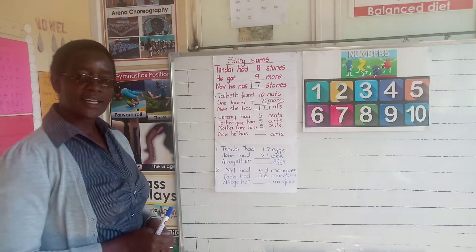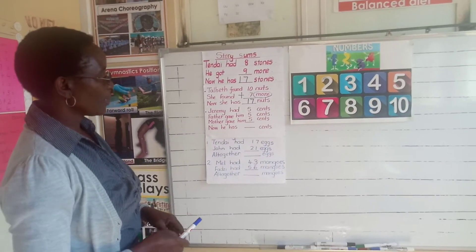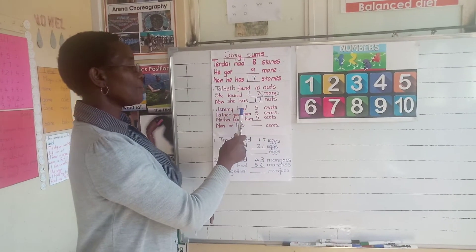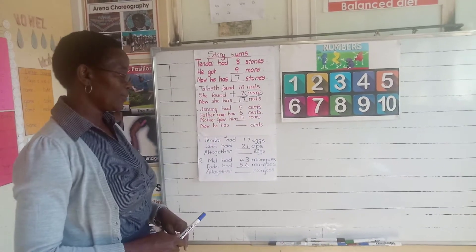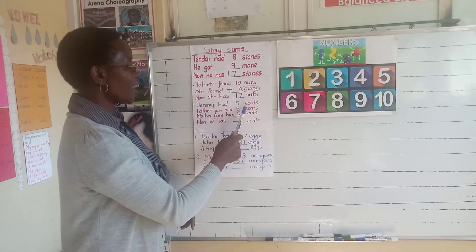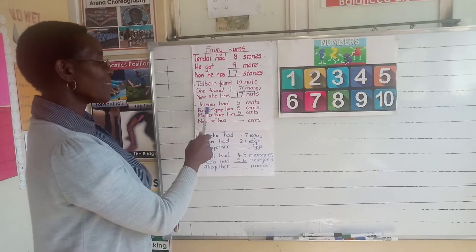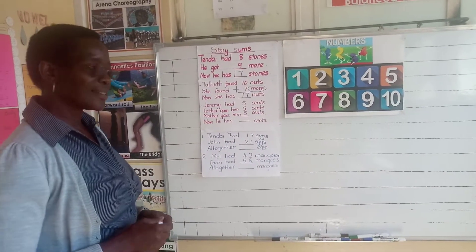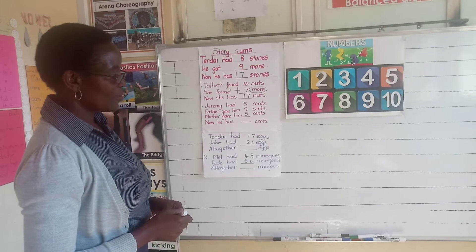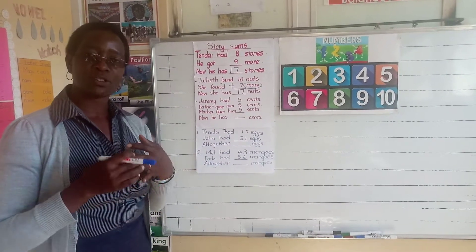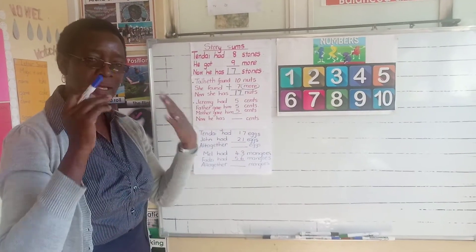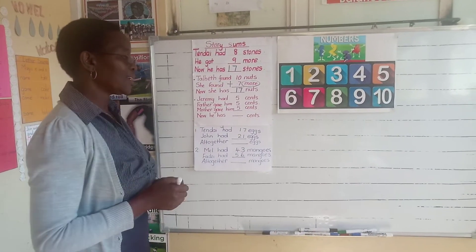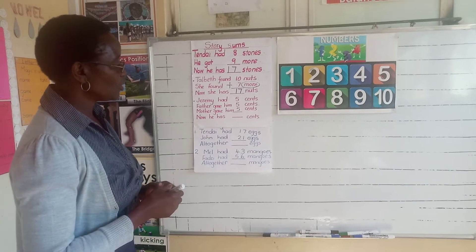Let's look at another example. This time, let's notice that we are adding three numbers. Jeremy had five cents. Father gave him five cents and mother gave him five cents. Now how many cents does Jeremy have? When we are adding, it doesn't matter whether you're adding two numbers, three numbers, four numbers, or as many numbers as you can think of — this method is still the same.